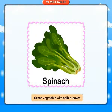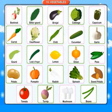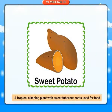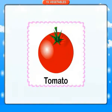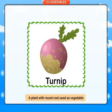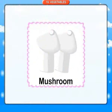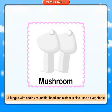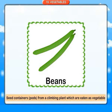Spinach: a green vegetable with edible leaves. Sweet potato: a tropical climbing plant with sweet tuberous fruit used for food. Tomato: a red fruit used as a vegetable. Turnip: a plant with a round root used as a vegetable. Mushroom: a fungus with a fairly round flat head and a stem, also used as a vegetable. Beans: seed containers or pods from a climbing plant, which are eaten as a vegetable.